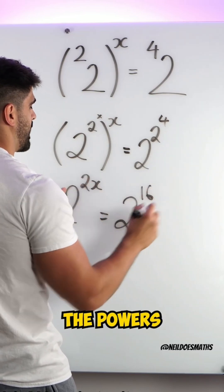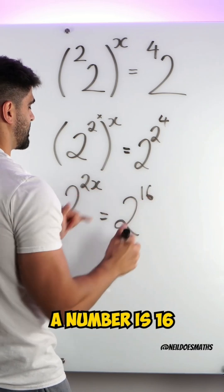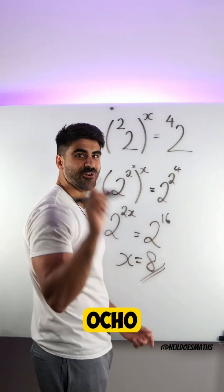And now we can compare the powers. 2 times a number is 16. x is actually 8. Nice.